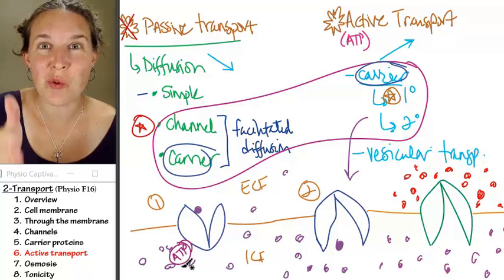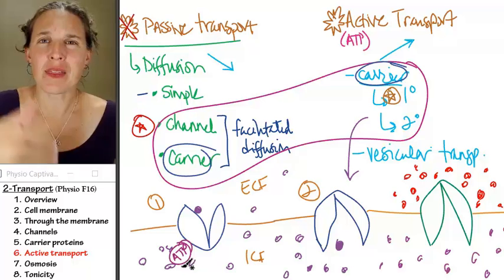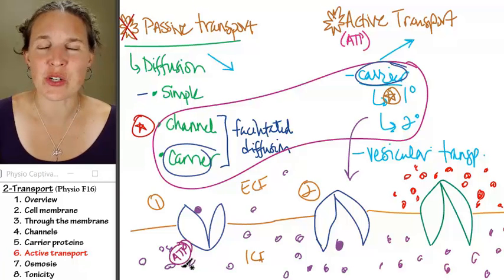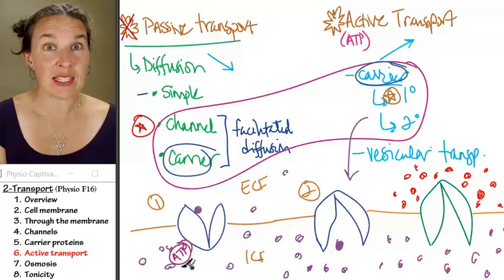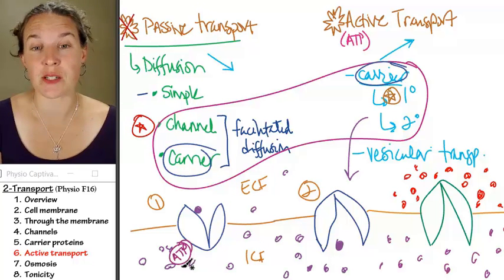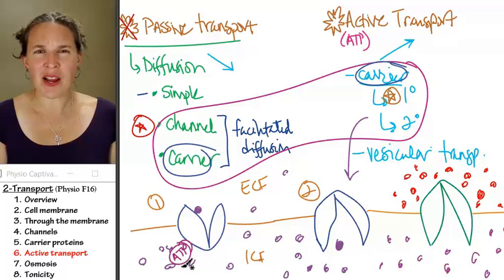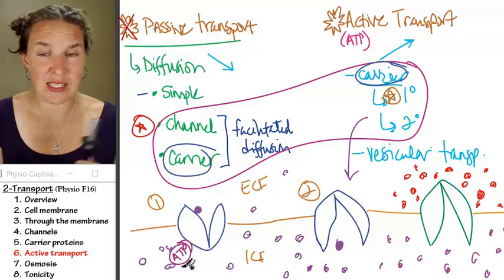Active transport, primary active transport requires ATP to pump molecules against their concentration gradient. You will see quite soon that this is actually super important for physiological function. Okay, that's primary active transport. Very straightforward, nice, easy.